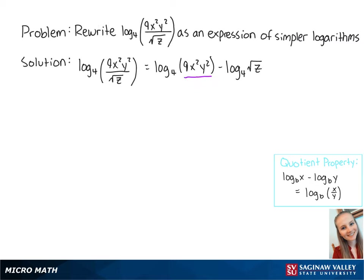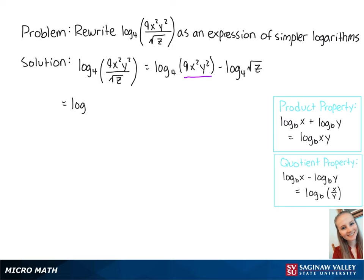Here, we can see that there is multiplication within the log, so we can use the product property to rewrite this as the log base 4 of 9 plus the log base 4 of x squared plus the log base 4 of y squared minus the log base 4 of the square root of z.